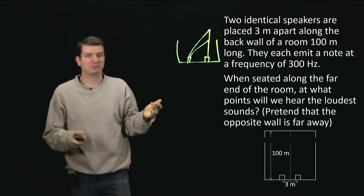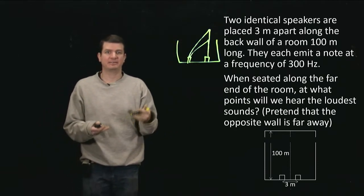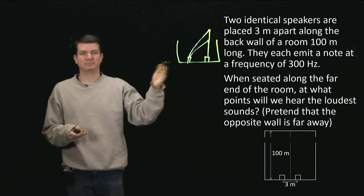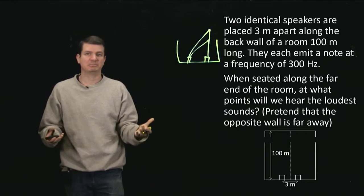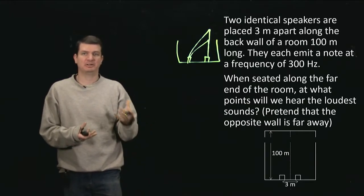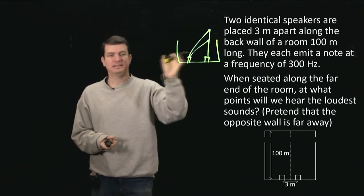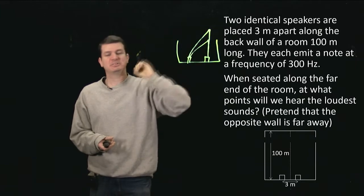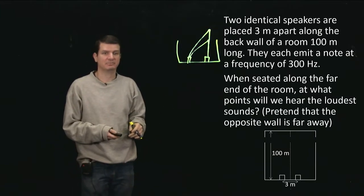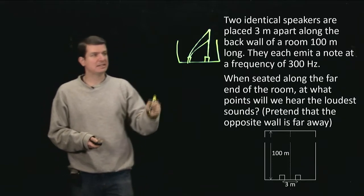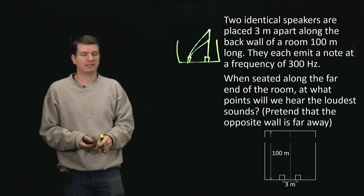Why do we care about what these paths are? Because for interference, it's the path difference — how far two waves travel — that gives rise to a phase difference and possibly makes them interfere destructively, as opposed to staying in phase. As they start in phase and progress, there's some different distance that one travels, and that results in either constructive or destructive interference. So we need to be able to assess what that difference is in order to figure out what's going to happen.